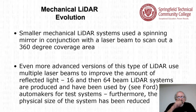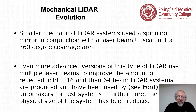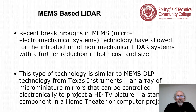Smaller mechanical LiDAR systems used a spinning mirror with a laser beam to scan a 360-degree coverage area. More advanced versions use multiple laser beams — 16 and then 64 beam systems have been used by Ford and other automakers for test systems. The physical size of the system has been progressively reduced.